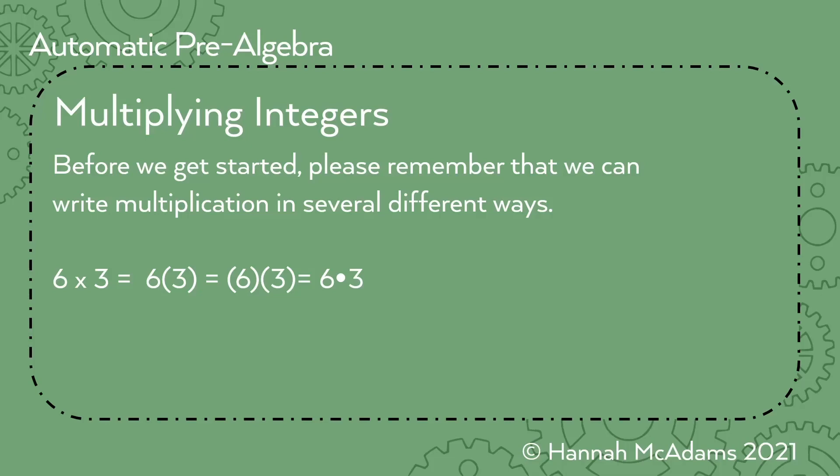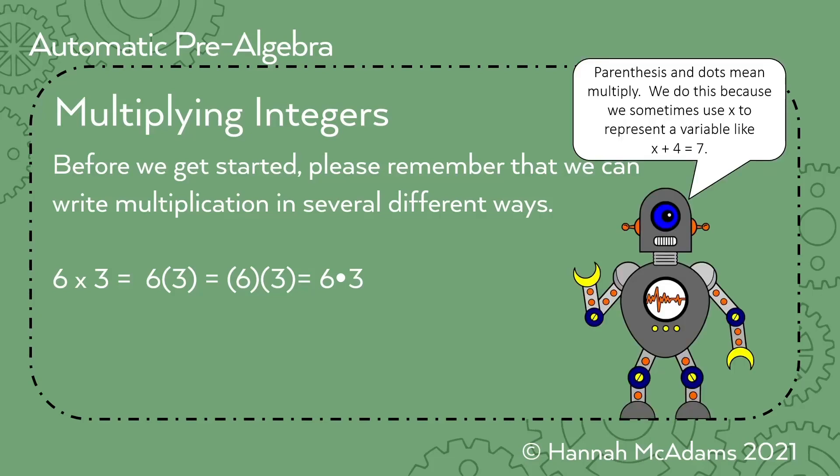Do you know why we use different ways to write multiplication? Because in algebra and pre-algebra you use letters. So if you were to say x times b, you would have two x's in a row — it would be very confusing. So yes, we use that because x sometimes represents a variable. Personally, when I write math problems, I stay away from x just because it can get really confusing with multiplication. I usually use n before I use x, but it doesn't really matter what letter you choose, except that x does sometimes represent multiplication.